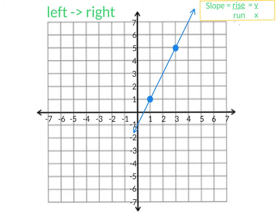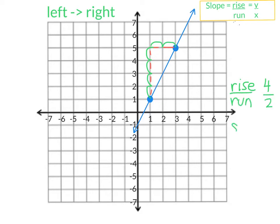Here's our next example. Remember we're going to go from the left point to the right point, and I'm going to trace an imaginary pathway so we can see it. We're going to go up one, two, three, four. So my rise is four, and from here I'm going to run two. So my run is two. So our slope is four over two. Now I'm often asked, well if we were to reduce this it would be two over one — would this be the same thing? It would be, and I'm going to show you right here, because if we were to rise two and then run one, we can see that this point is still on the line. So they are equivalent, as they are equivalent fractions.